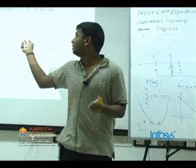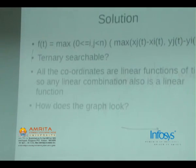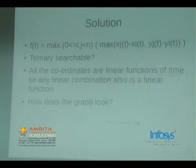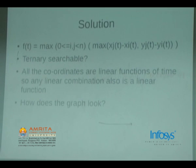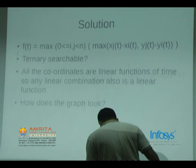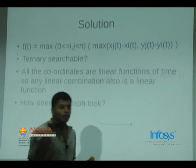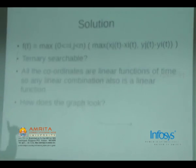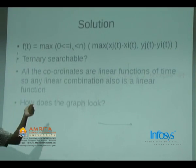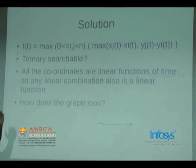Does this look ternary searchable to anyone? This looks like a fairly complicated function. Why should this be ternary searchable? The observation that you must make is xi of t. What will I be ternary searching on? I will be searching on t, not on length. If there are binary search problems, you will be searching on the answer directly. If there are ternary search problems, you will be searching on a parameter which leads to the answer.